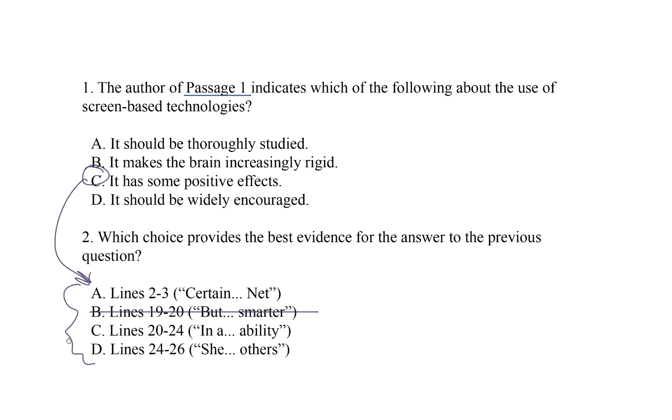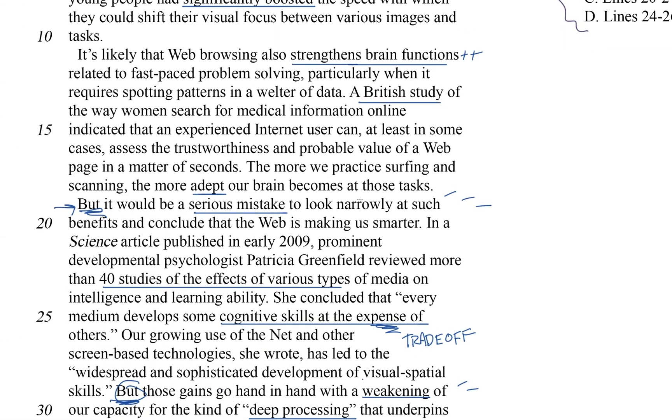Choice C, lines 20 to 24, beginning with in A. In a science article, here we are, published in early 2009, prominent developmental psychologist Patricia Greenfield reviewed more than 40 studies on the effects of various types of media on intelligence and learning ability. Does this tell us anything about screen time? Not really.